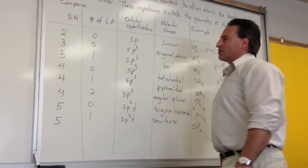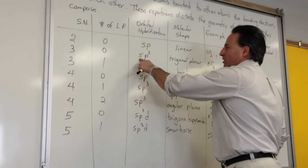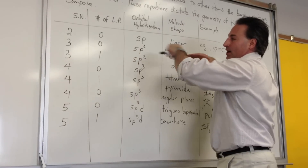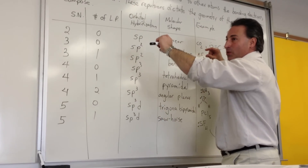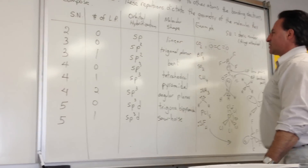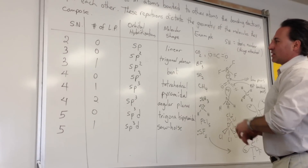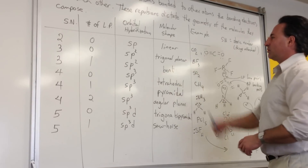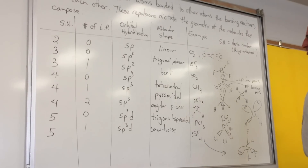If there are three things attached to the central atom with no lone pairs, it's going to be SP2 hybridized — meaning an S orbital and two P orbitals combine to become the same energy, forming three equivalent orbitals called SP2. Because the electrons seek to be as far apart as possible on the central atom, you get a trigonal planar molecule. Boron trifluoride is an example of trigonal planar geometry.